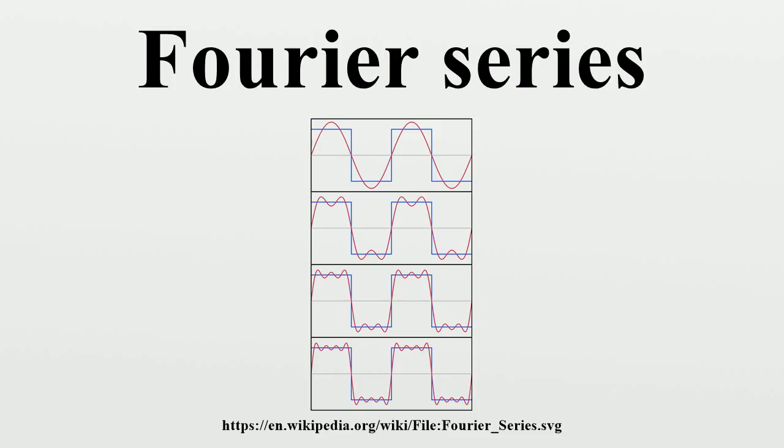one notable application of Fourier series on the square is in image compression. In particular, the JPEG image compression standard uses the two-dimensional discrete cosine transform, which is a Fourier transform using the cosine basis functions.